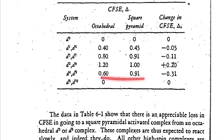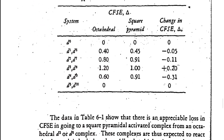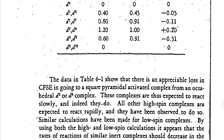For D4 and D9 systems, the CFSE of the octahedral geometry is less than the square pyramidal form, so these complexes are labile. In summary, when there is a positive change in CFSE the complexes are inert, and when there is a negative change in CFSE the complexes are labile.